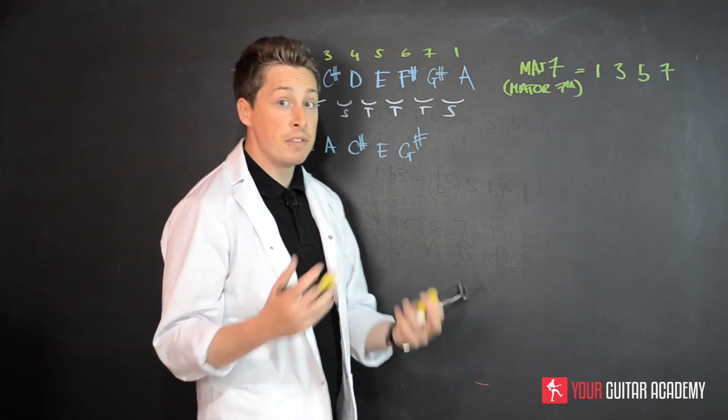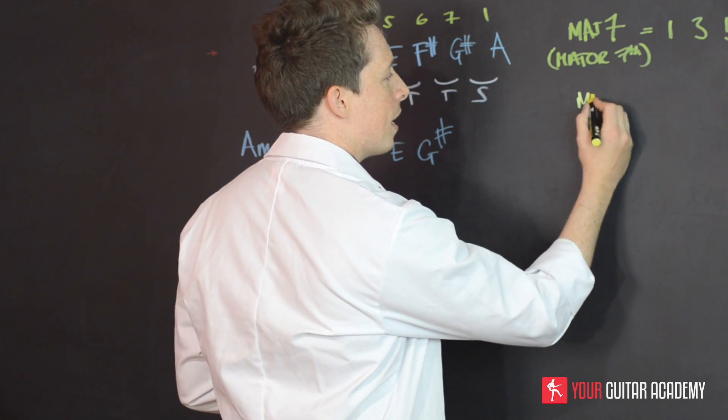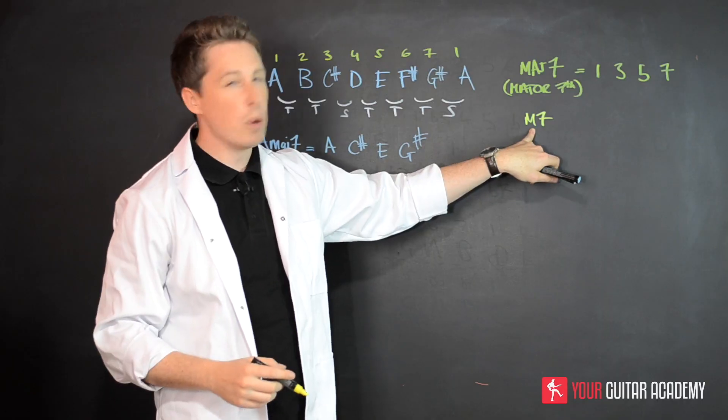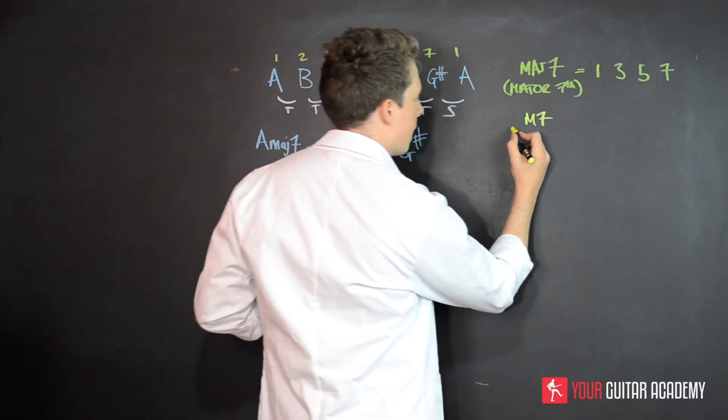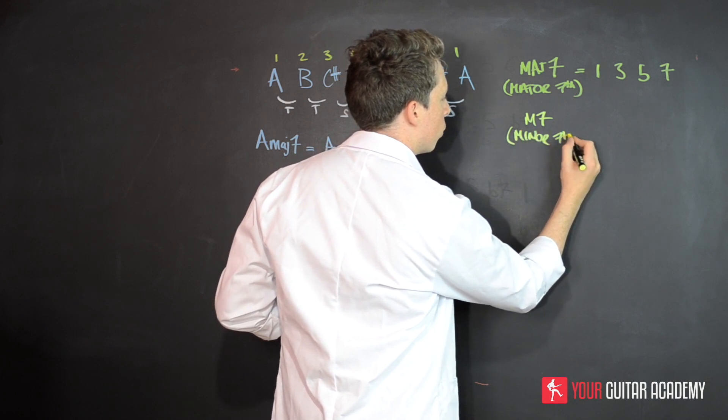Minor seven, first of all, will typically look something like this. You'll have an M and then a seven. Even though I put it in capitals there, that's probably going to be a small M. Remember, I'll do it over here, which is going to be minor seventh chord.